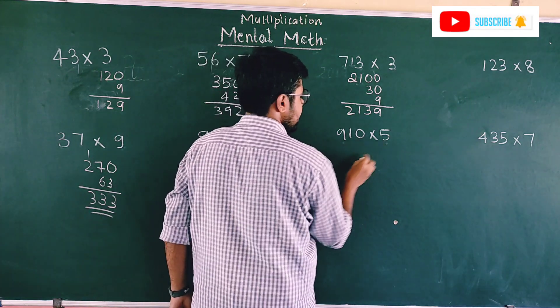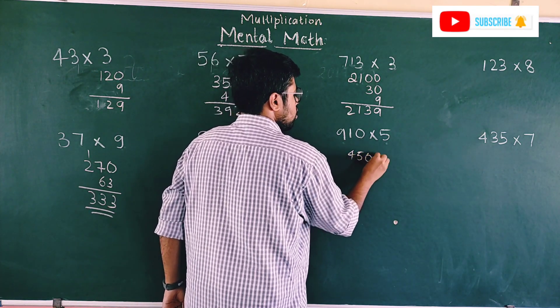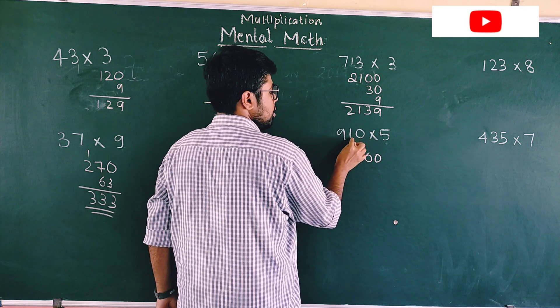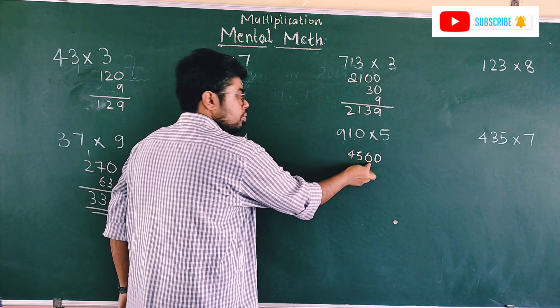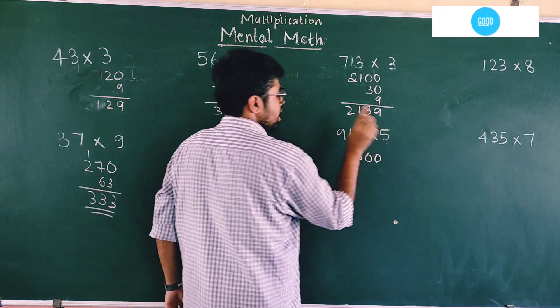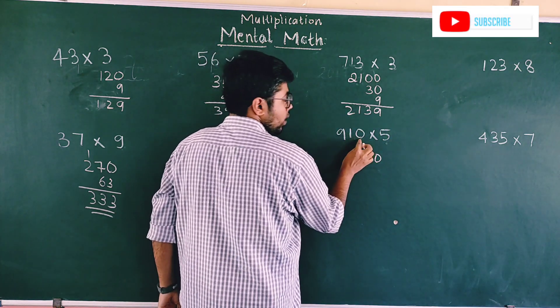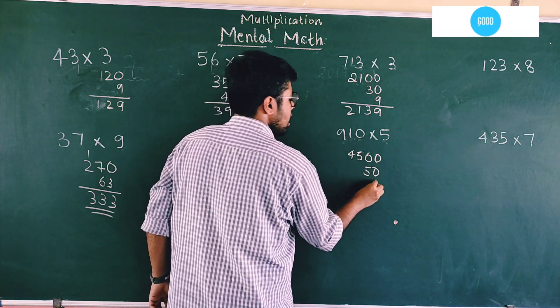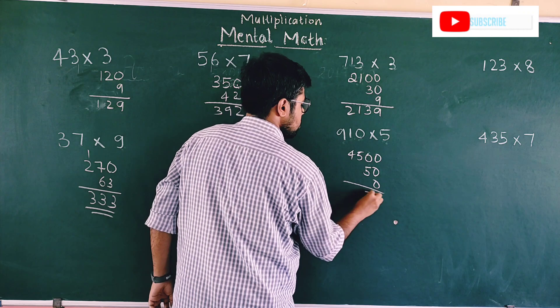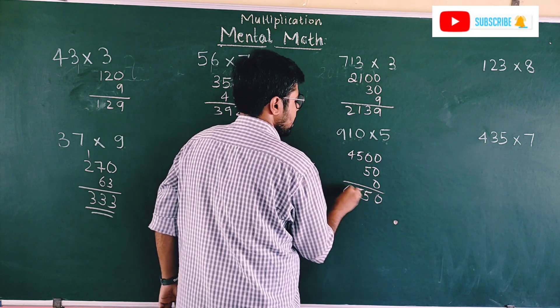Similarly here, one more example. 9 times 5 is 45. You have to put 2 zeros because there are 2 numbers after the 9. Then 1 into 5, 1 times 5 is 5. I should put 1 zero because there's one more number after 1, so it becomes 50. Next, 5 times 0 is 0. So add all: 4550 is the right answer.